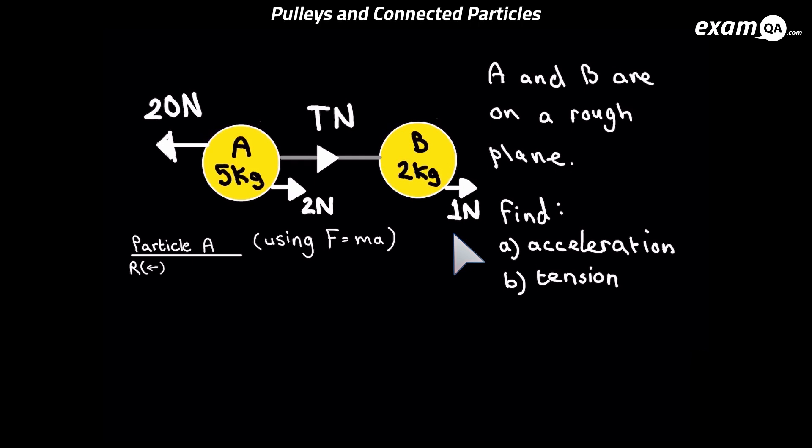That's all going to be equal to MA. Now remember M is the mass, so that's simply going to be 5. So you have 20 minus tension minus 2 equals 5 times acceleration.